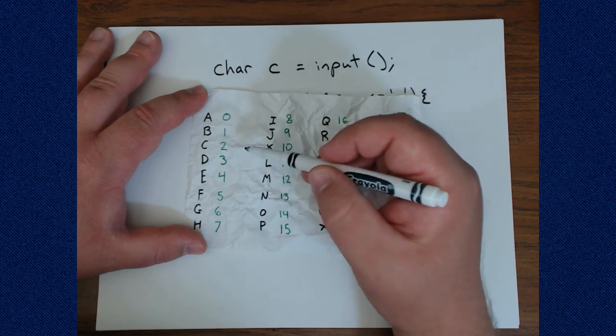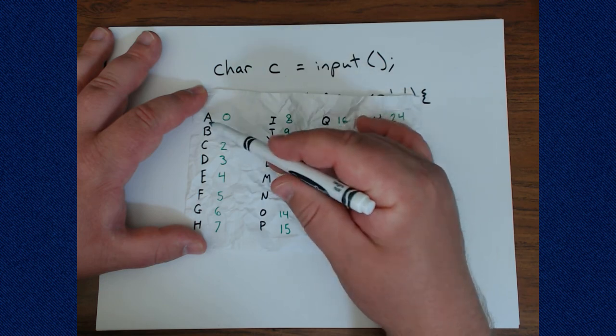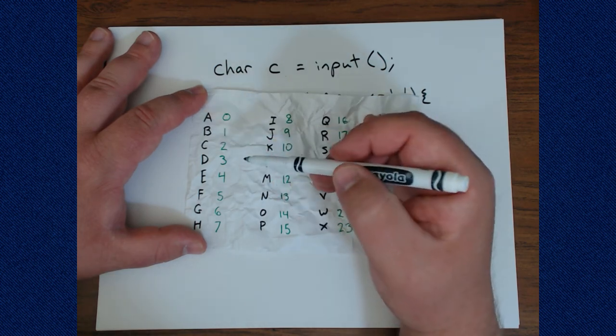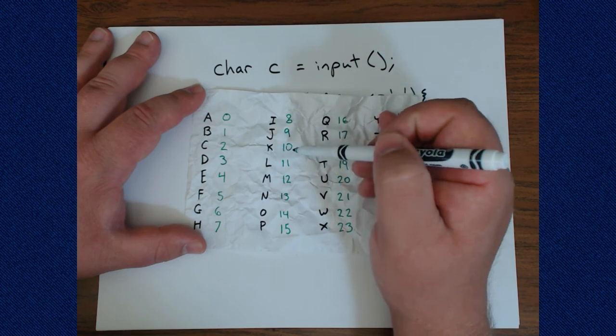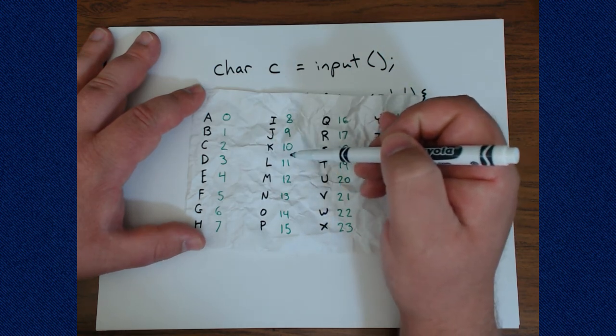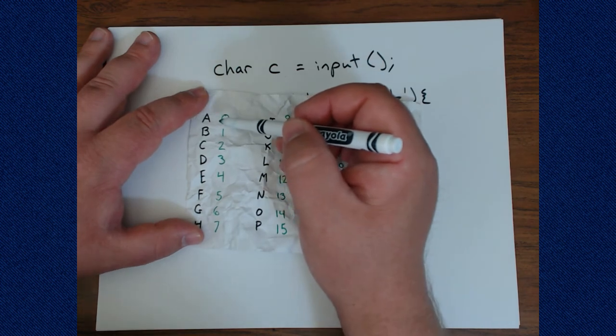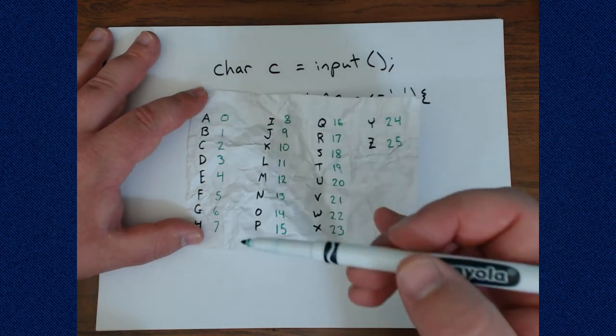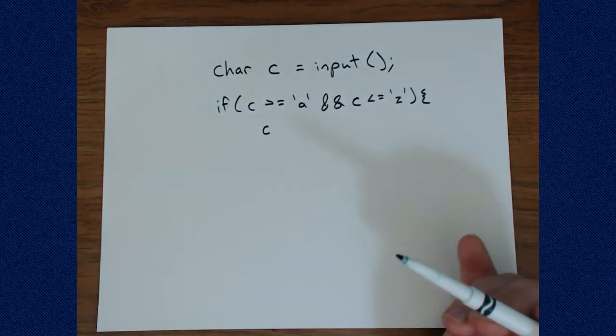then we can take that value, 10, and offset whatever code capital A is by that number. So if we find out that k is 10 away from a, then we can just add 10 to a, capital A in particular, and then we'll have an uppercase k. And I'll show you how that works here.